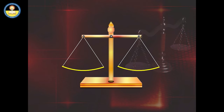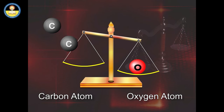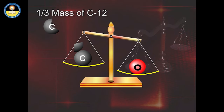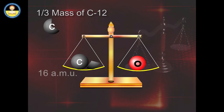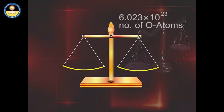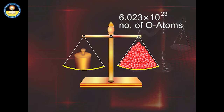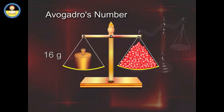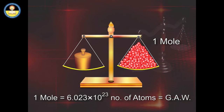Let us learn about the relationship between mole and gram atomic mass. If we take an oxygen atom on a beam balance and balance it with carbon atoms, we find it is balanced with 1⅓ carbon atoms, equal to 16 atomic mass units. This means 6.023 × 10²³ oxygen atoms equals Avogadro's number, equals 16 grams of oxygen — this is equal to 1 mole, or 1 gram atomic weight.